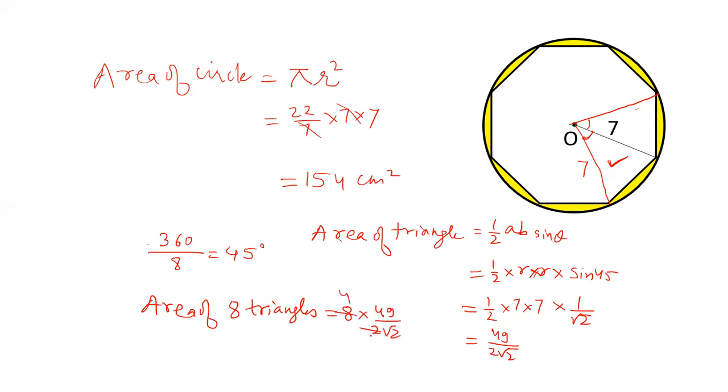This can be cancelled out, 4 and even this we can cancel out. 4 by root 2 will give 2 root 2. The reason is 4 can be written as 2 into 2 and this 2 can be written as root 2 into root 2. So, 1 root 2 will be cancelled out and we get the answer 2 root 2. Multiply 49, we get 98 root 2. This is area of 8 triangles, that is area of this octagon, 98 root 2.